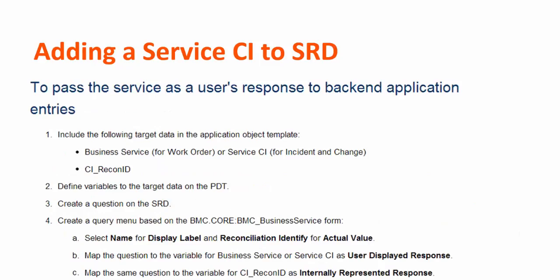To pass the service as a user's response to backend application, expose the business service in case of a work order, or service CI in case of an incident and change, in your AOT. Expose the CI like an ID, define variables in the PDD, and create a query menu which is based on the BMC core BMC business service form.